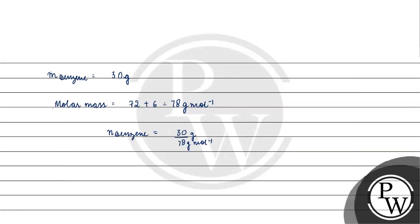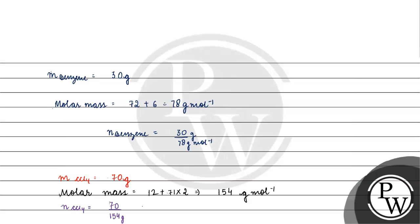Now for carbon tetrachloride: the mass of CCl4 is 70 grams. The molar mass of CCl4 is 12 plus 71 into 2, which gives 154 grams per mole. So the number of moles of CCl4 is 70 divided by 154 grams per mole.